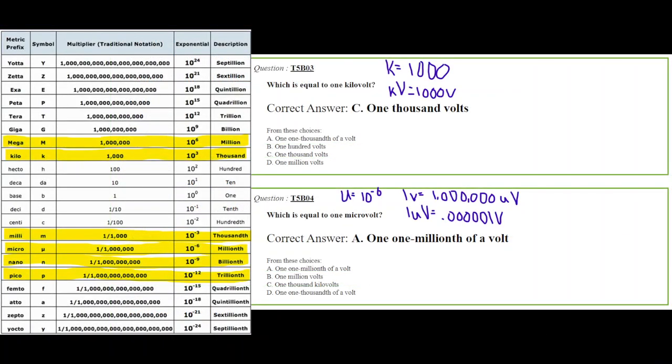All righty. So question number three says, which is equal to 1 kilovolt? Now, if you have a kilovolt, most likely you have used the word kilo before. Like I got 5k in the bank, that would be $5,000 assumed. So with 1,000 volts, that is a kilovolt. 1,000 kilo is 10 to the third power kilovolts.